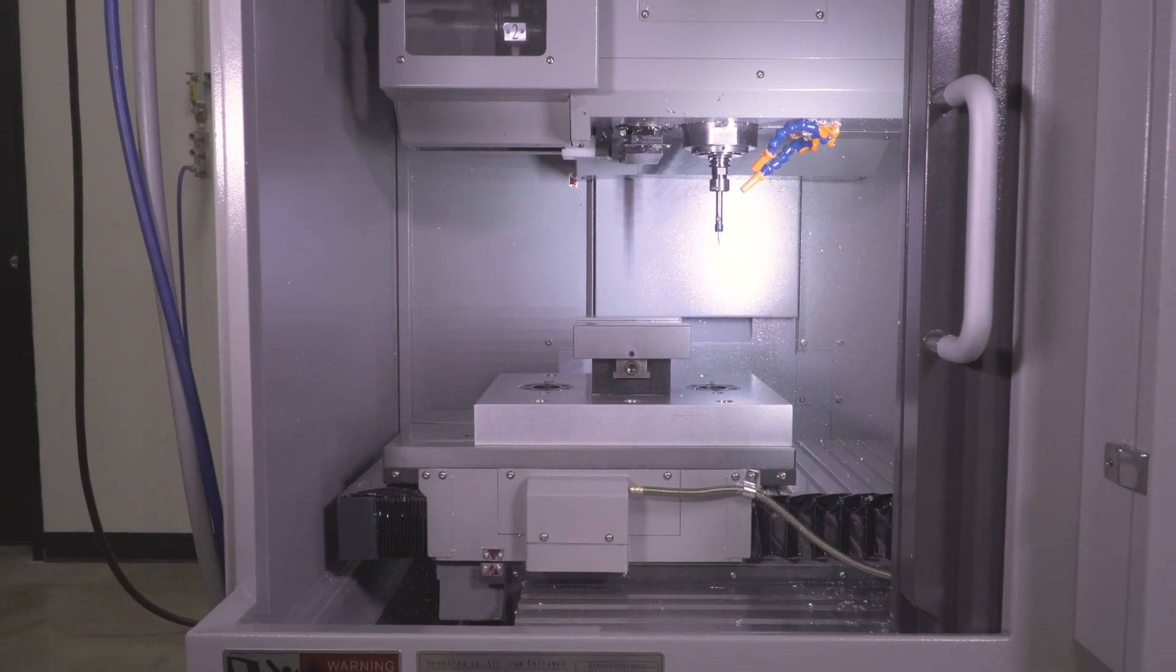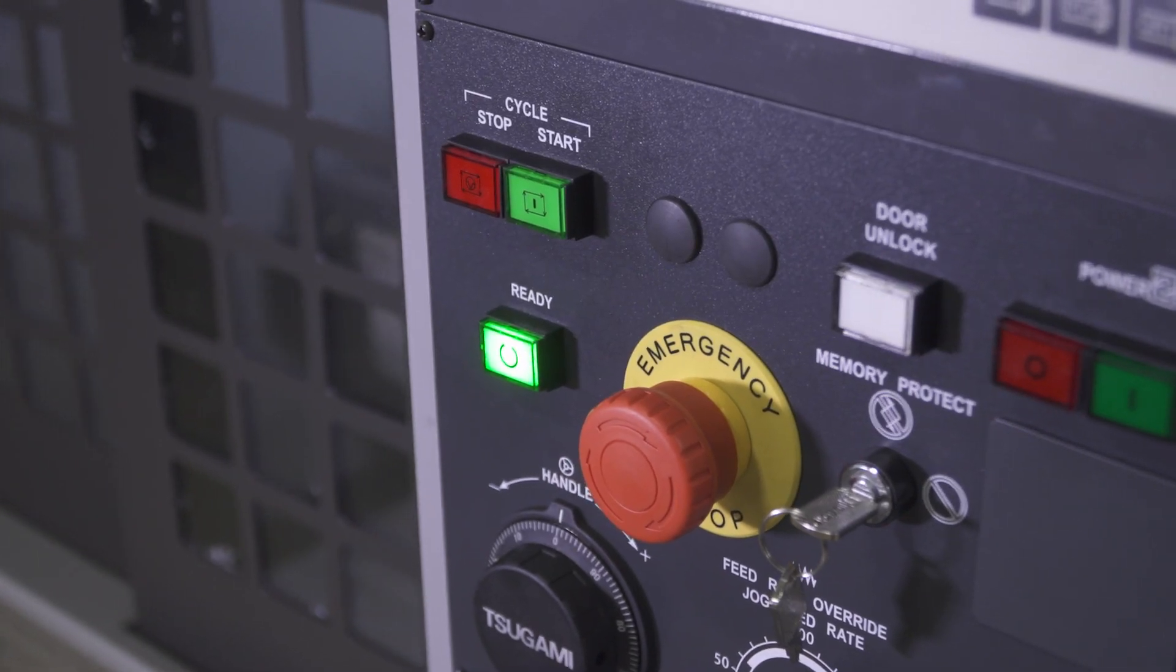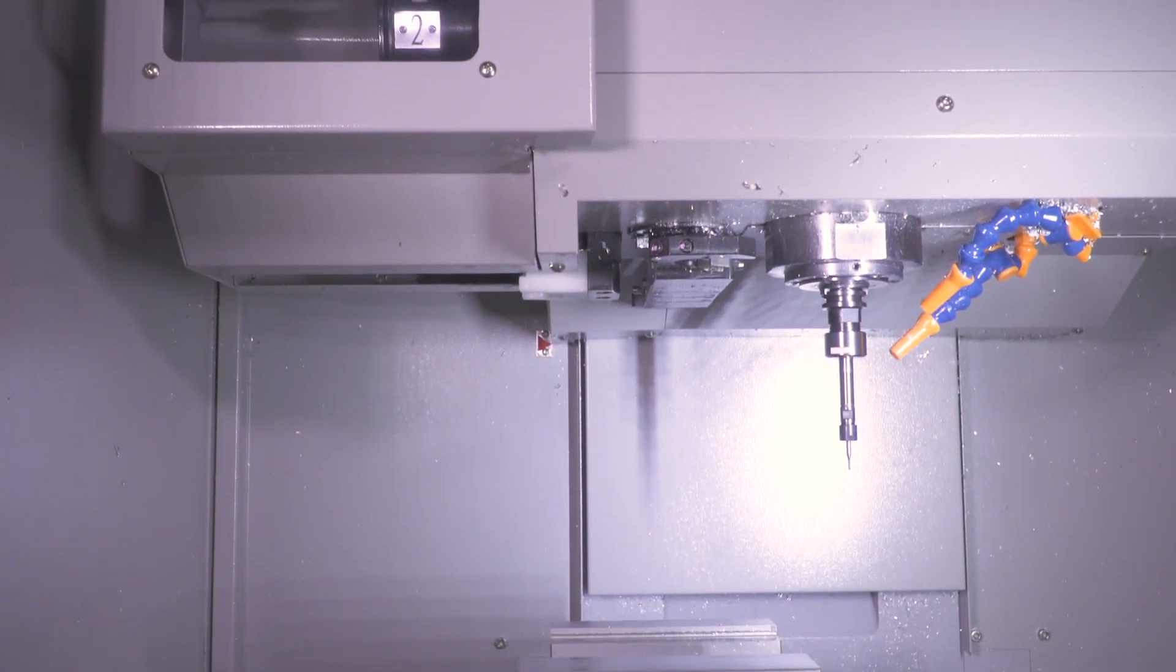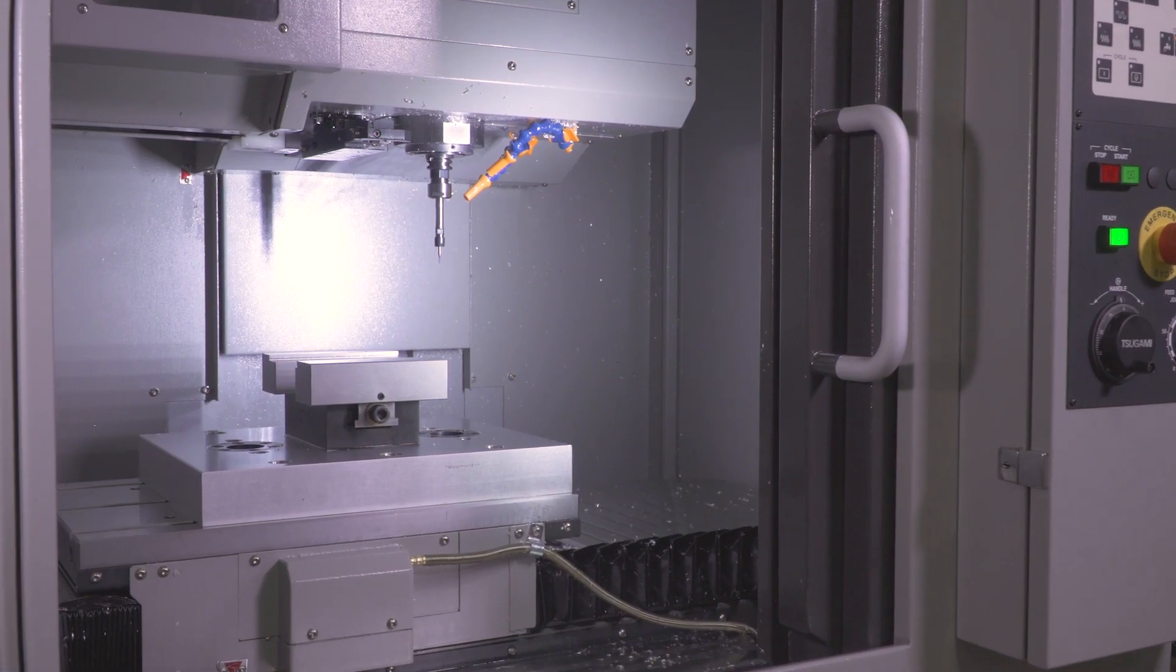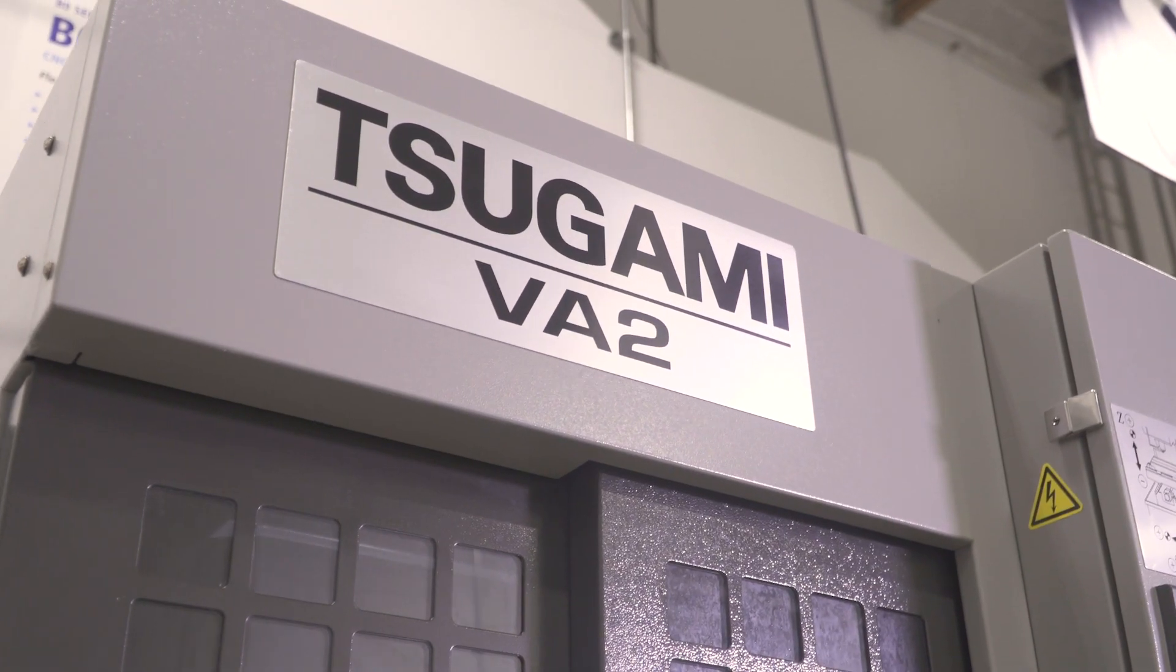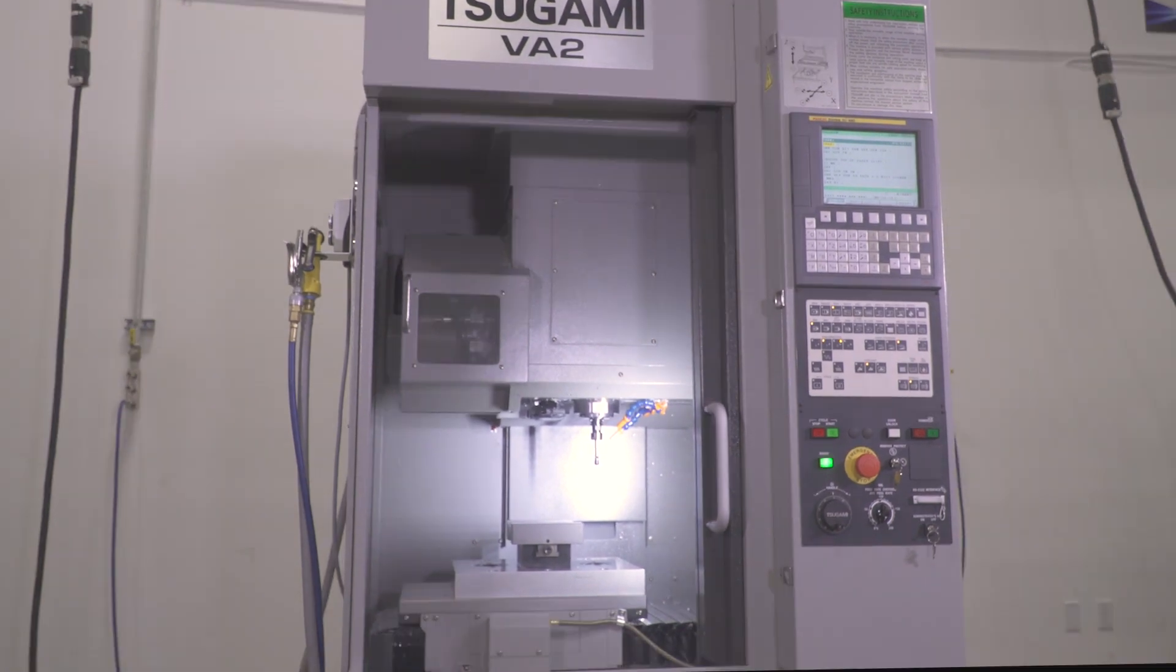The VA2 from Tsugami REM sales is the perfect platform for your small milling and production needs and all fits inside the ultra compact space saving design. Whether your shop is limited on floor space or you just need a production line of compact high-speed spindles, the VA2 is the machine for the job.